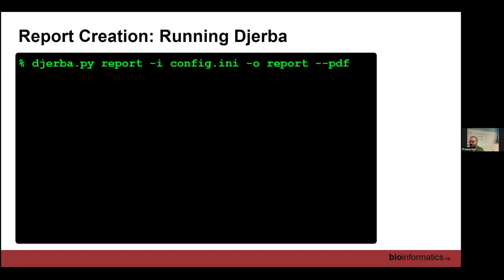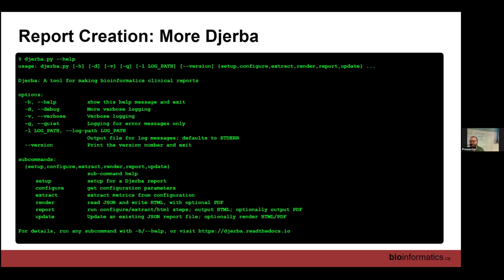We put this into a plain text file and then run an application on the command line. The command to generate a Jirba report is nice and simple: `jirba.py report -i config_file -o report_directory --pdf` to make the PDF. That's it. Jirba does have many other capabilities — you can run various steps in isolation, update existing reports, and do a bunch of other things — but 95% of the time we are just using the report command to make reports.